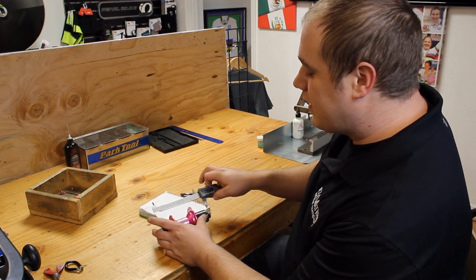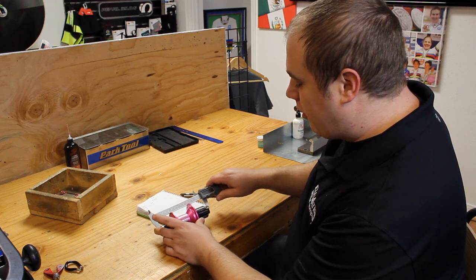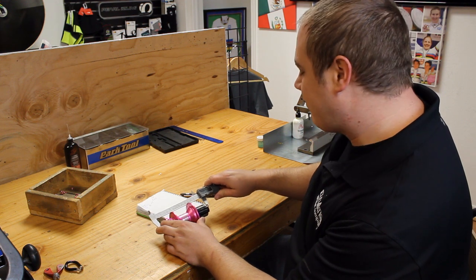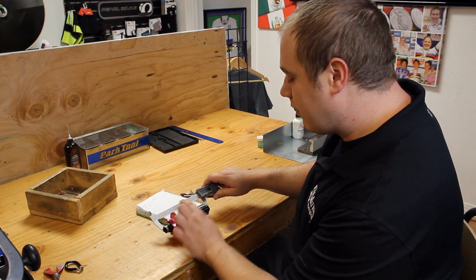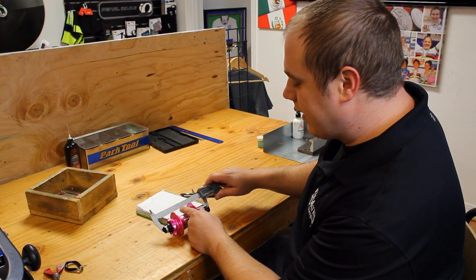The easiest way to measure that is take your calipers, go end cap to end cap. So 148, cut that in half, which will put you at 74.